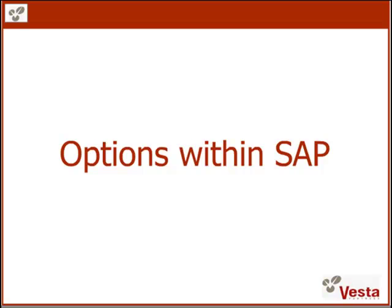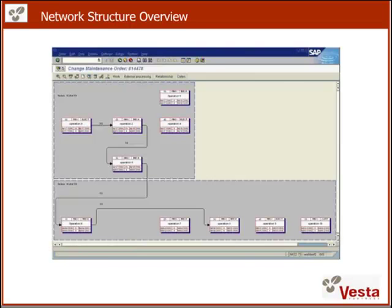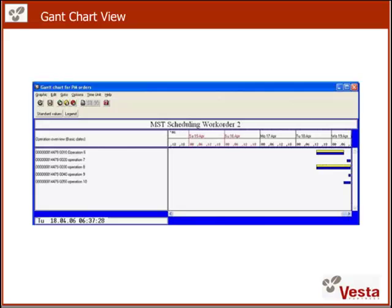Let's look at the different scheduling options within SAP. What you see here is the network structure overview screen. You can find it by following the menu path: go to, graphic, network structure in your work order transaction. It shows the individual operations and their relationship to each other, and also allows you to see the dependencies to other work orders. This screen is not only for visualization purposes, but also allows you to create or modify relationships.